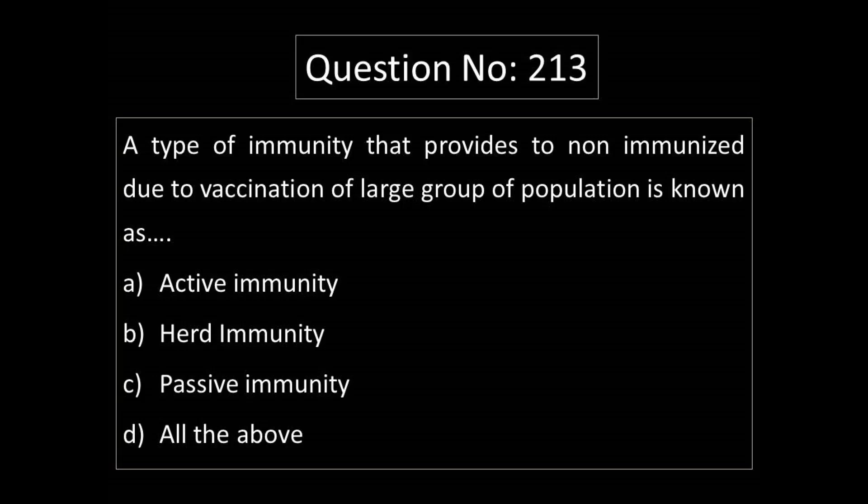Question No. 213. A type of immunity that provides protection to a non-immunized individual due to vaccination of a large group of population is known as: Option A: Active Immunity. Option B: Herd Immunity. Option C: Passive Immunity. Option D: All the Above.